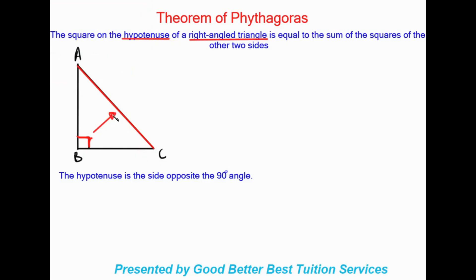The hypotenuse is opposite your right angle and is also the longest side on your triangle. So line AC is our hypotenuse. The theorem states: the square on the hypotenuse of a right angle triangle is equal to the sum of the squares of the other two sides.